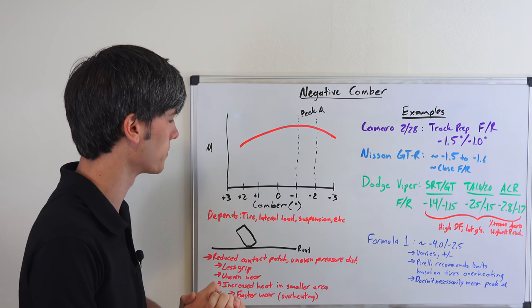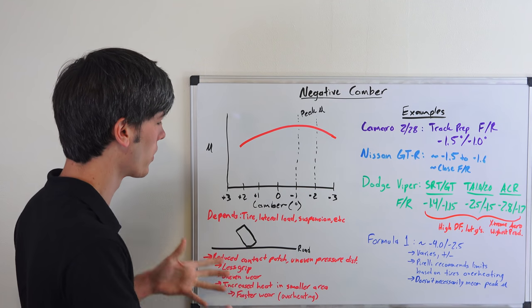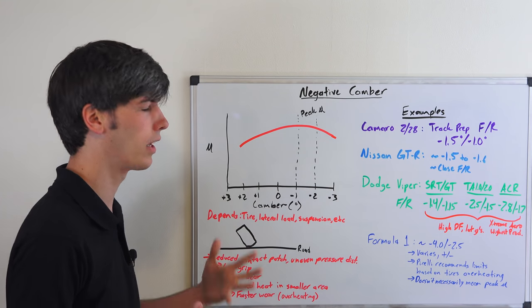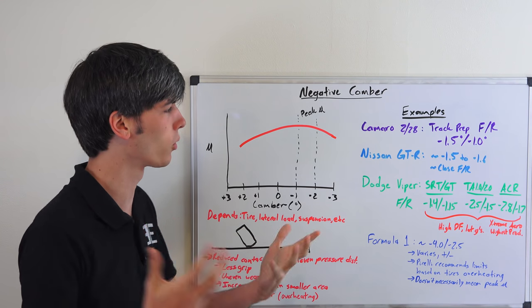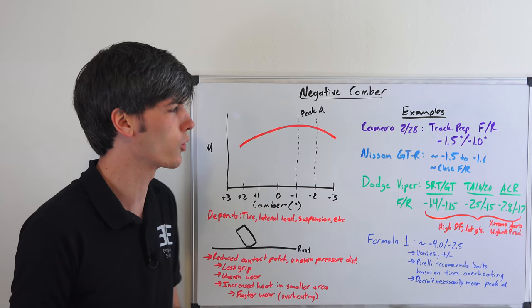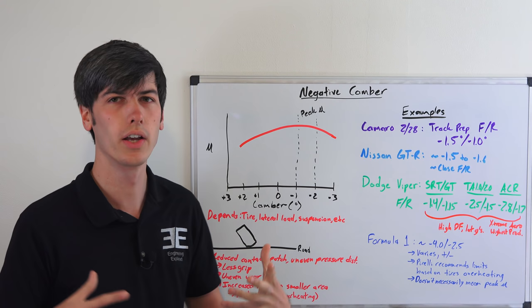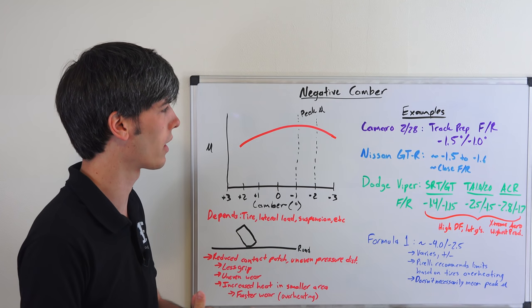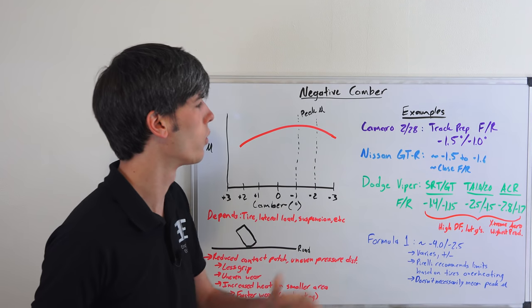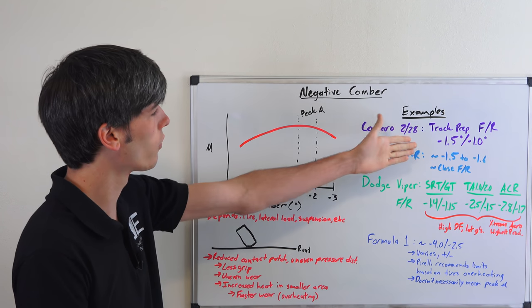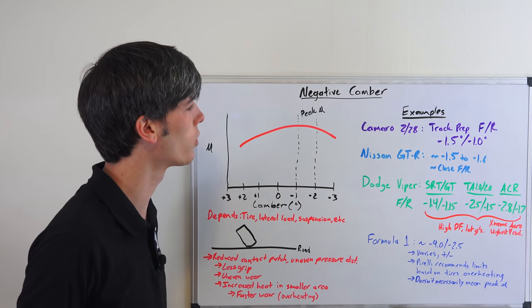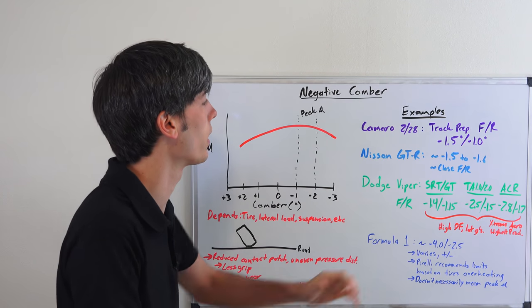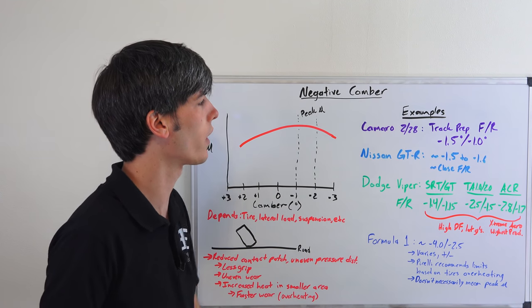I wanted to kind of dive into some examples to talk about this. Keep in mind that this is for performance-oriented vehicles going on a track day, going to autocross, keeping maximum lateral grip possible within limits of what camber angles you can use. For the track prep for a Camaro Z28, the recommended camber angles are negative 1.5 degrees in the front, negative 1 degree in the rear.